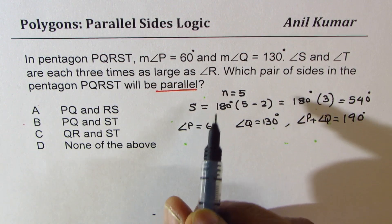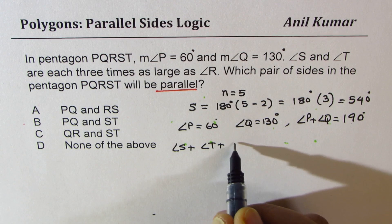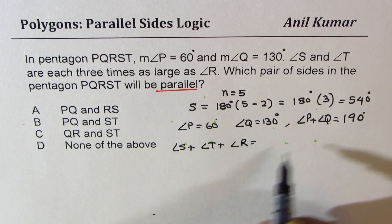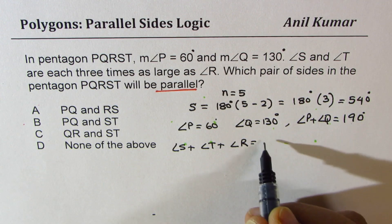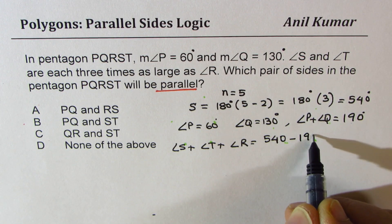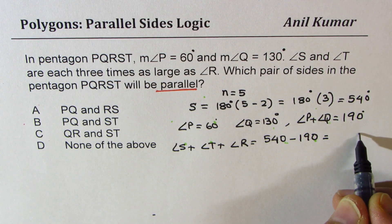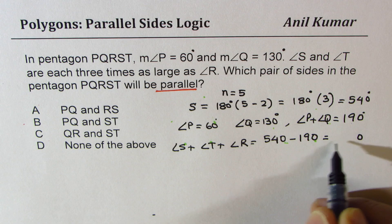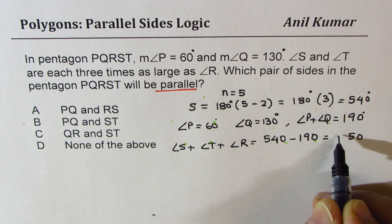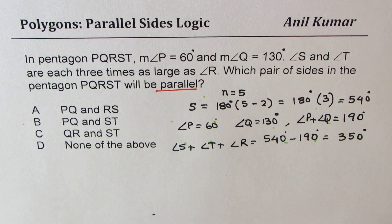So that means we are remaining with angle S plus angle T plus angle R. That should be equal to the difference of these two, which is 540 minus 190. Now how much is that? So that is 350 degrees. So that is sum of all these angles.